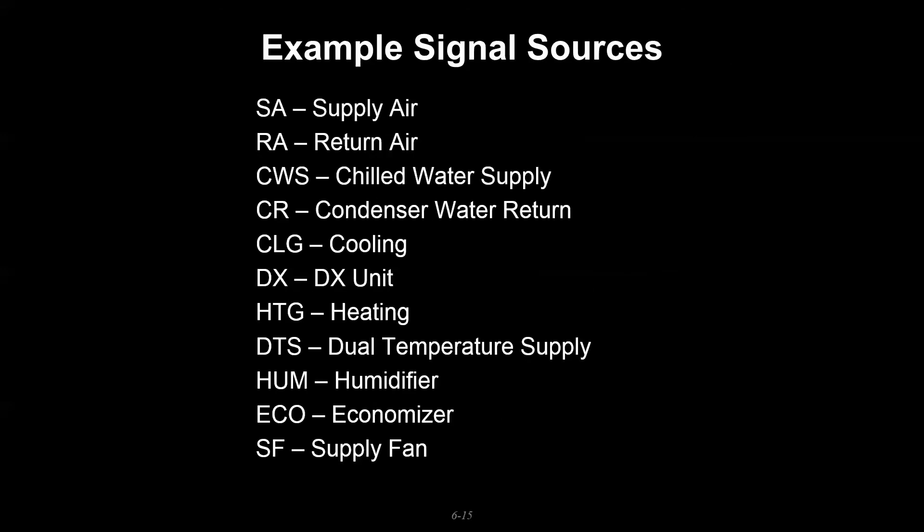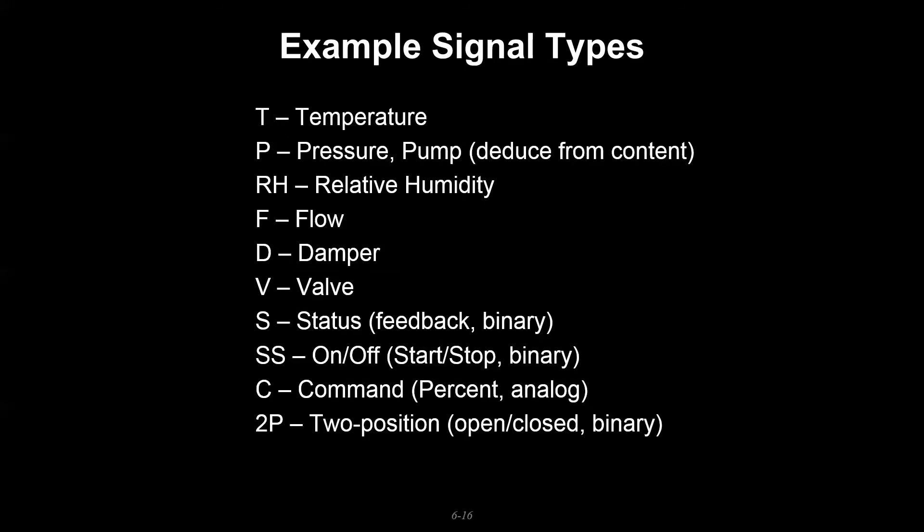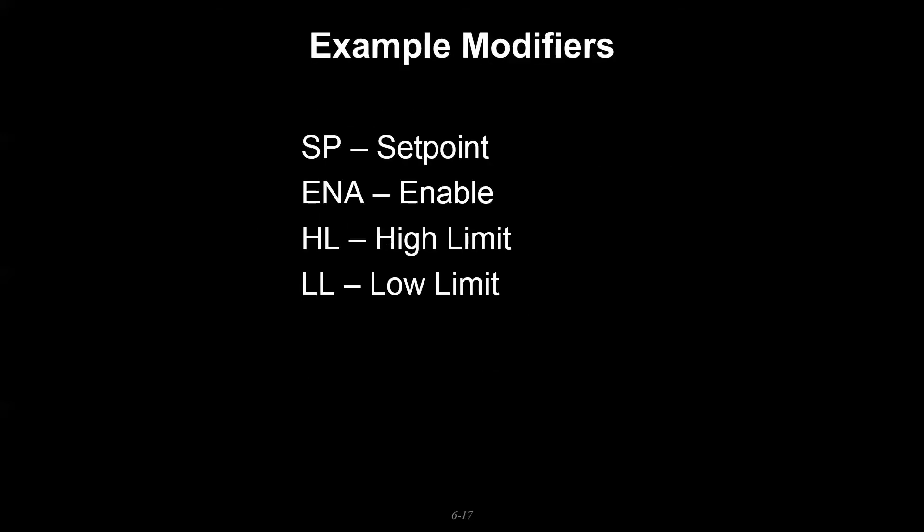There's a number of different signal sources we can use that typically correspond to different HVAC systems or their components or the modes they may run in. There's a number of different signal types that represent the array of process variables in our HVAC systems, so temperature, pressure, flow, damper, and valve position are going to be very common. A number of other command types or statuses that we may include. And then the modifiers may indicate where you have a setpoint, some type of system enable, or a high/low limit associated with a certain variable.